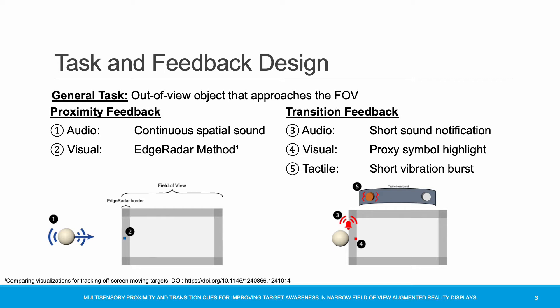In terms of feedback design, we distinguish between proximity and transition cues. Our method combines the two cues into an overall feedback we call a mode. Modes follow a fixed order: the user always receives the proximity cue first, which provides information on the spatial location of the AR object as long as it is located outside the field of view. As soon as the object touches the border of the field of view, the transition cue is triggered. When we talk about modes, we use the following notation: first the modality of the proximity cue, then the modality of the transition cue — for example, audio-tactile for audio proximity with tactile transition, or visual-audio for visual proximity with audio transition.